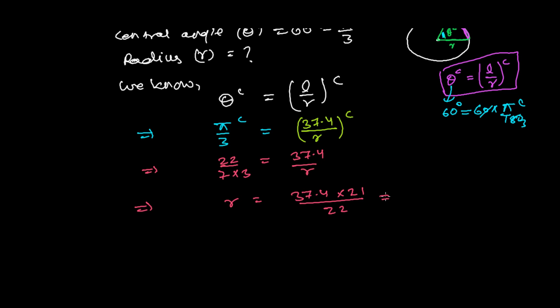Now for the calculation. Using a calculator: 37.4 × 21 ÷ 22 equals 35.7. Since this is in centimeters, the radius of the circle r is 35.7 cm.